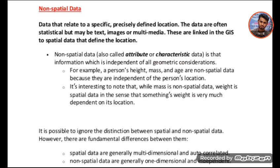Non-spatial data, also called attribute or characteristic data, is that information which is independent of all geometric consideration. For example, a person's height, mass and age are non-spatial data because they are independent of the person's location.